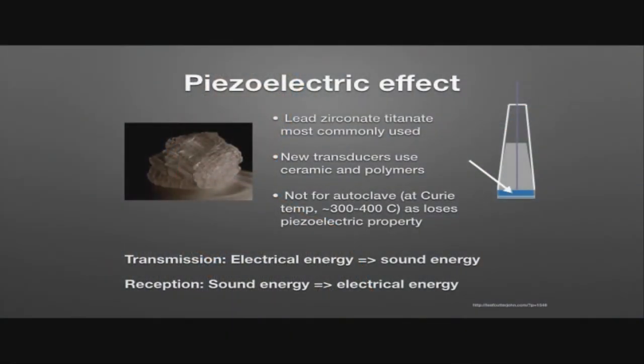One of the main components of the ultrasound probe is the crystals. These are the piezoelectric crystals, typically made from lead zirconate titanate, though newer transducers use a ceramic polymer construction. Whether older or newer, the important thing to remember is that you cannot autoclave these — sterilizing them at 300 to 400 degrees Celsius will deform the crystal and destroy their piezoelectric properties. Most importantly, these crystals can both transmit and receive sound energy — they are bi-directional energy converters — and that's how we form the ultrasound image.